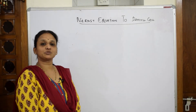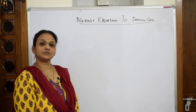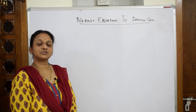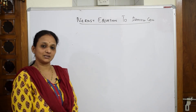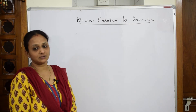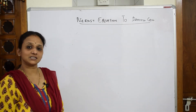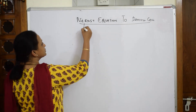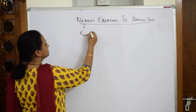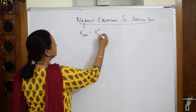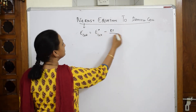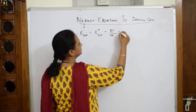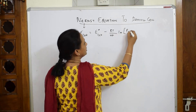Welcome back friends to one more session. We have already learnt the Nernst equation — let's write the derivation first and then start applying it. E_cell is equal to E°_cell minus RT by NF, times ln of products by reactants.